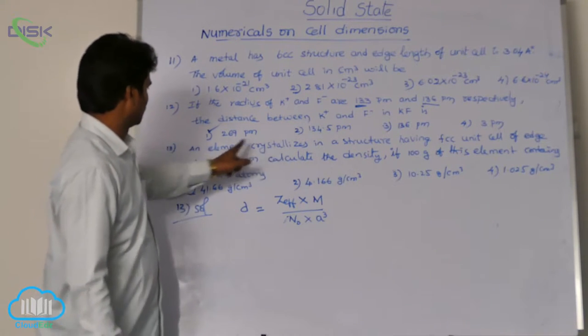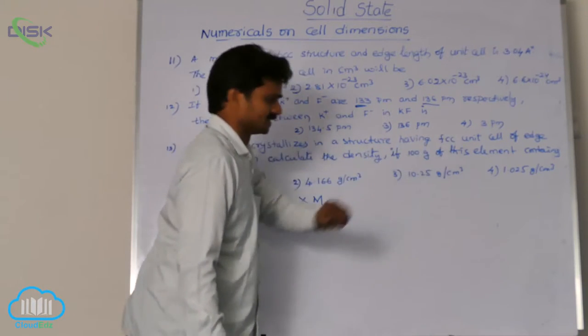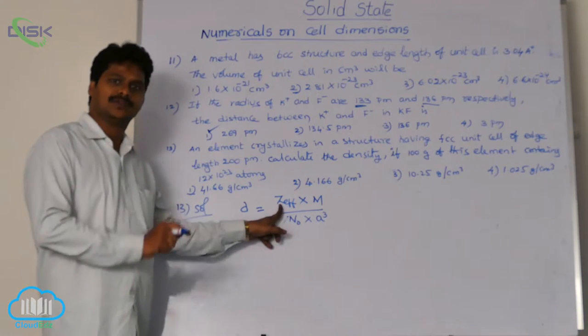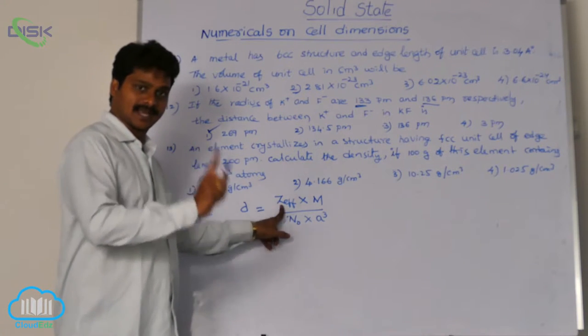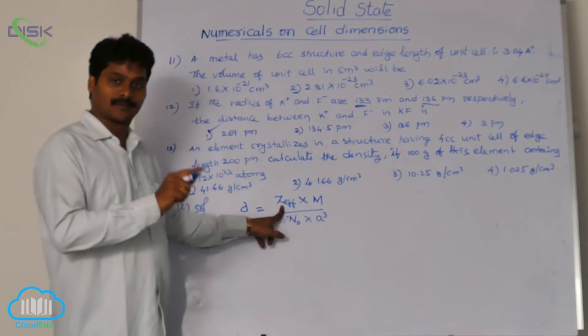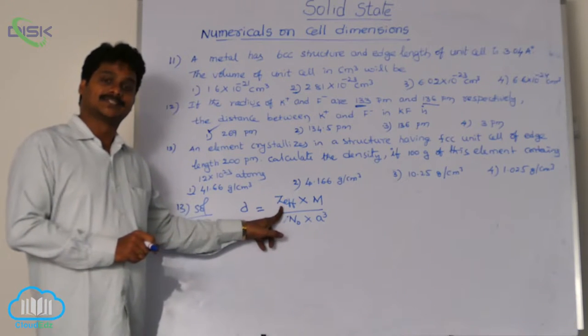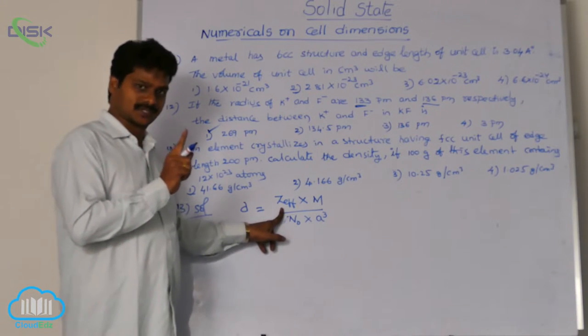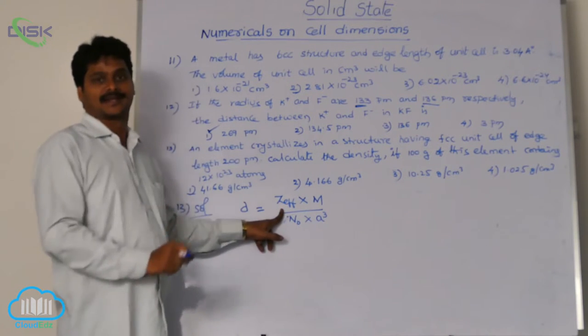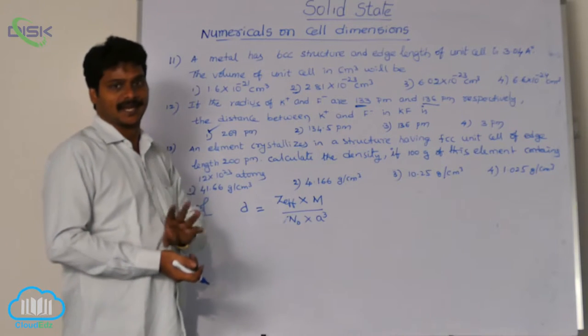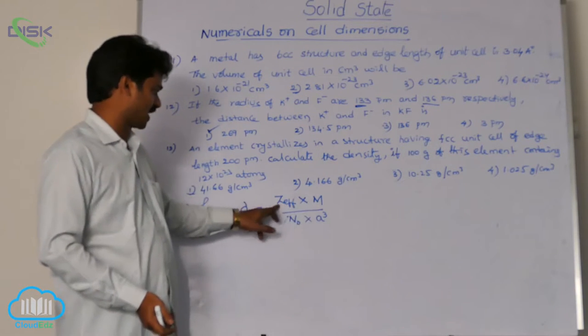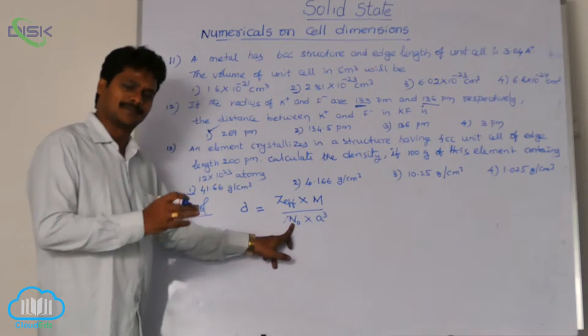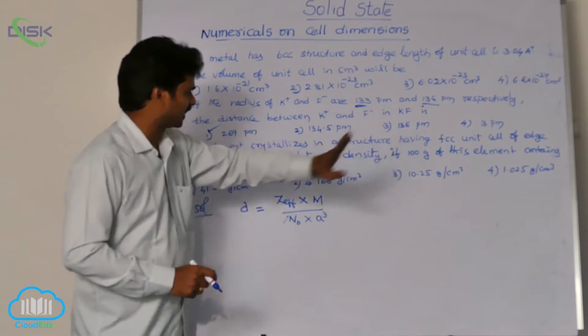But here the element is crystallizing in which geometry? FCC. So in FCC effective atoms are 4, we know that. How 4? 8 corners, 8 into 1 by 8 equals 1. 6 face centers, 6 into 1 by 2 equals 3. So from all the corners contribution 1 atom, from all the 6 face centers contribution 3 atoms. 1 plus 3 equals 4 effective atoms. But here Avogadro number we know 6 into 10 power 23 nearly. Edge length is already given.